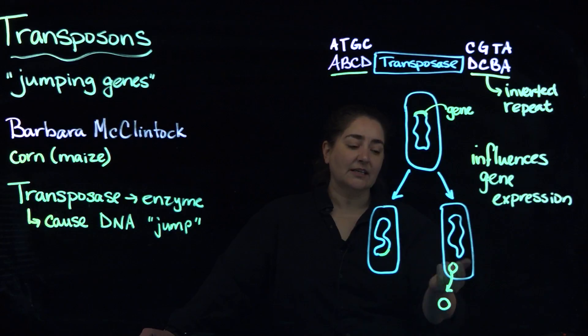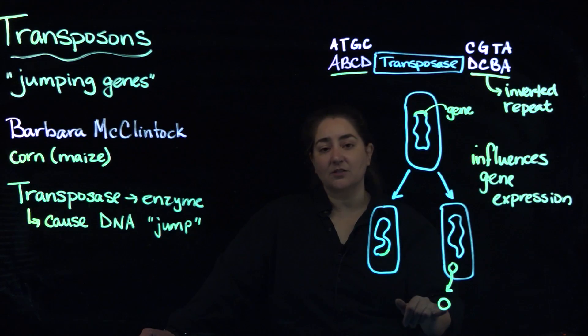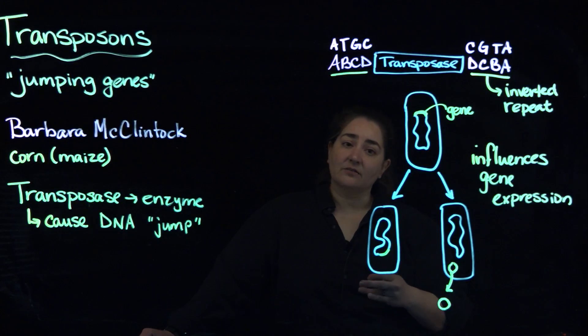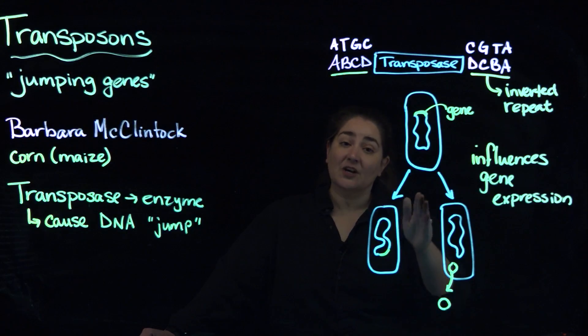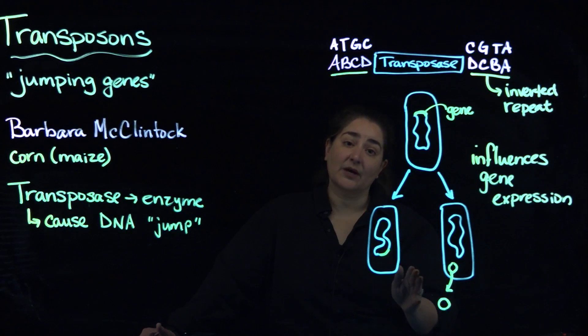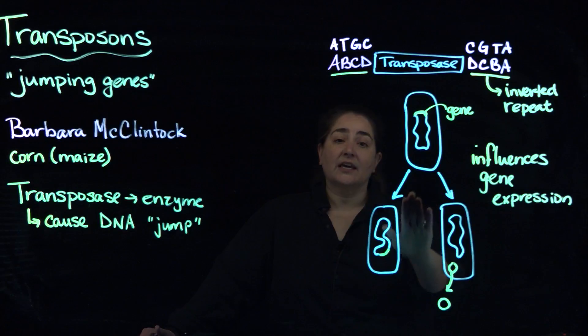That gene can essentially come out and circularize into a plasmid, and that plasmid is released or excluded from the bacterial cell and can be picked up by other organisms. Now transposons and the activation of transposons tends to be relatively rare in bacterial cells, but it can happen.